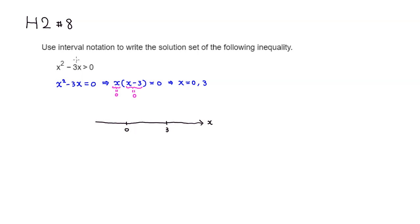We know that x squared minus 3x equals 0 when x is 0 or x equals 3. Everything in between is going to be either positive or negative, so let's check sample numbers: x equals negative 1 for the region less than 0, x equals 1 for between 0 and 3, and x equals 4 for greater than 3.